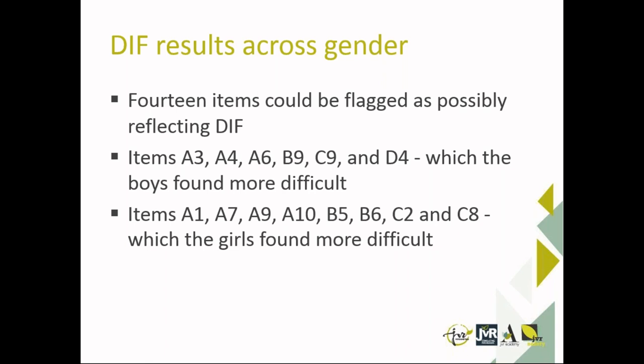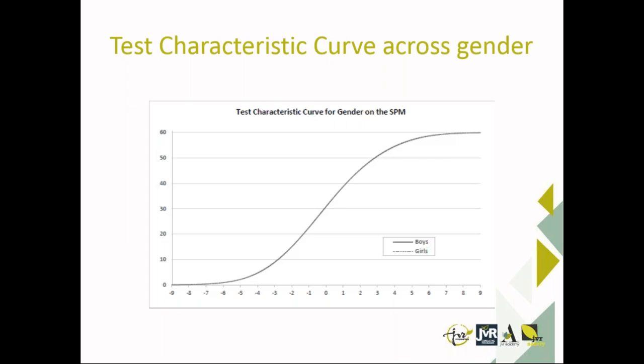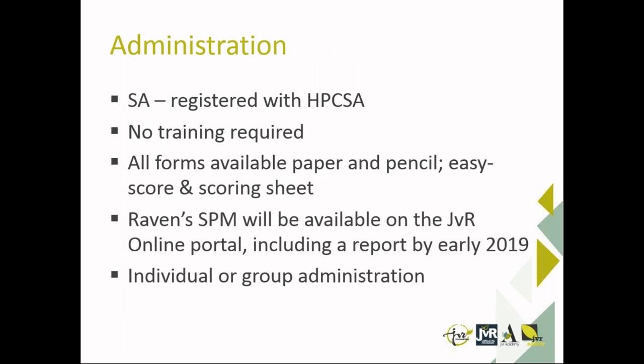Looking at DIF across gender: 14 items could be flagged as possibly reflecting difference, with some items more difficult for boys and others more difficult for girls, but again no reason for concern and no pattern that concerns us. The test characteristic curve across gender shows the same pattern for both girls and boys when responding to the Ravens, with no indication of bias.